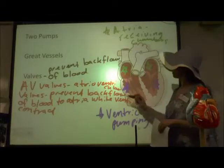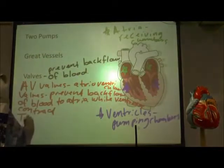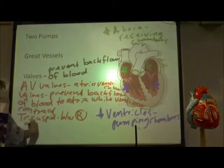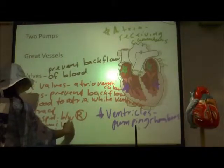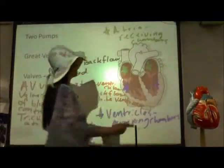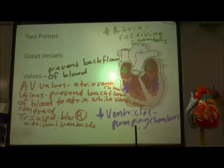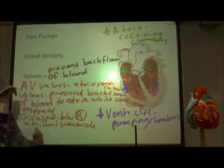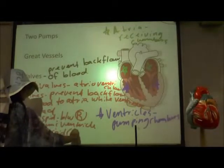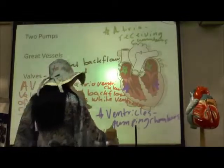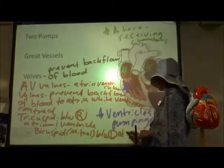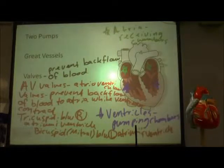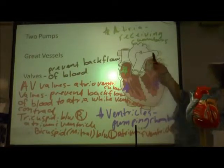The two AV valves are: on the right side, the tricuspid valve, between the right atrium and ventricle; and on the left side, the bicuspid valve, also called the mitral valve because it resembles the mitral hat worn in the Catholic Church. The bicuspid or mitral valve sits between the left atrium and ventricle. These valves prevent the backflow of blood to the atrium from the ventricles.